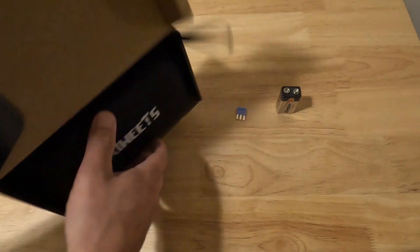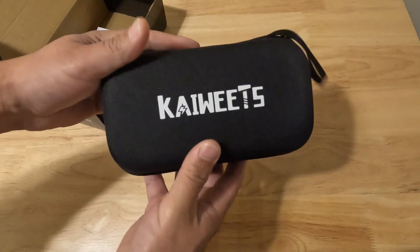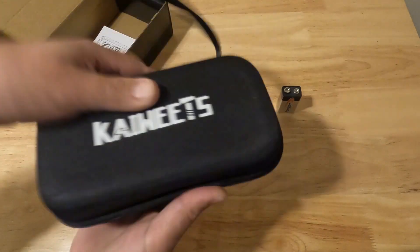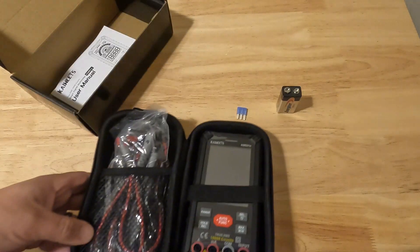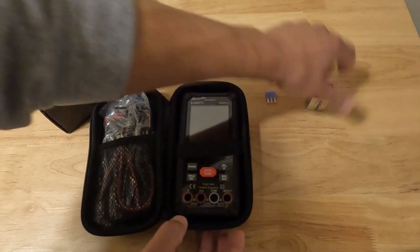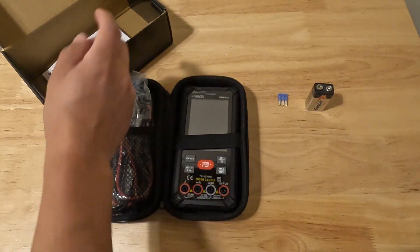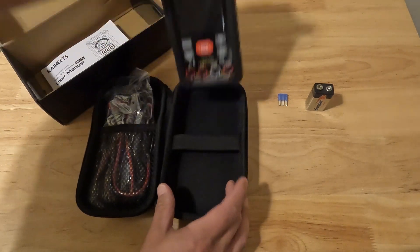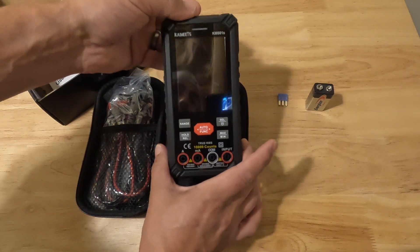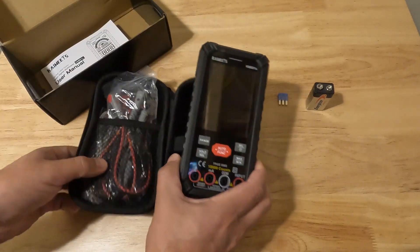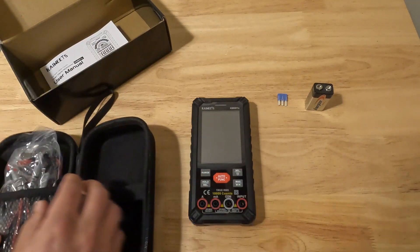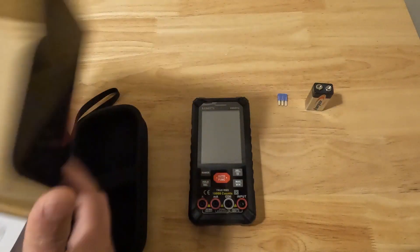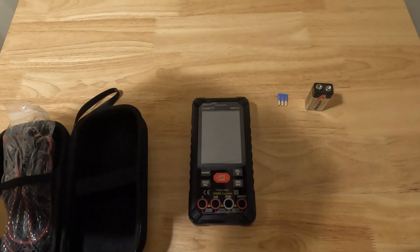Let's get right into the unboxing. You can see it comes with this nice case, very similar to the KM602. However, this one has buttons on the interface where the other one is just a screen with buttons on the side. We'll take it out so you guys can take a look at it.